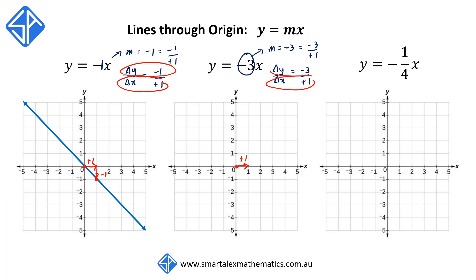Δy, our rise, is negative 3, because we're going to move down 3 units to get to the next point. We then join them up and we have the graph y is equal to negative 3x.